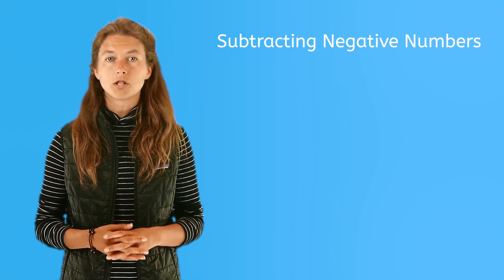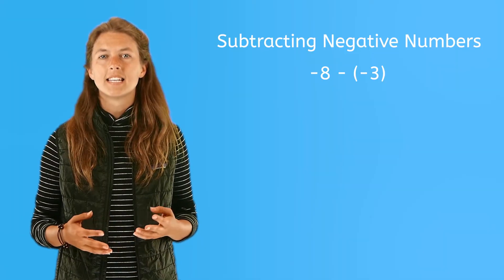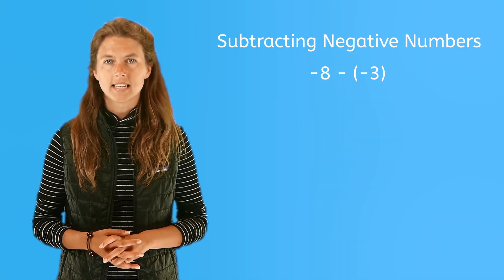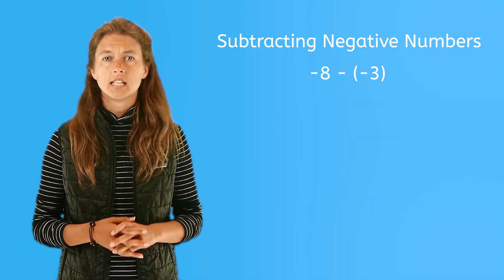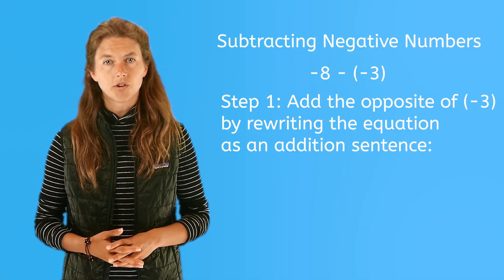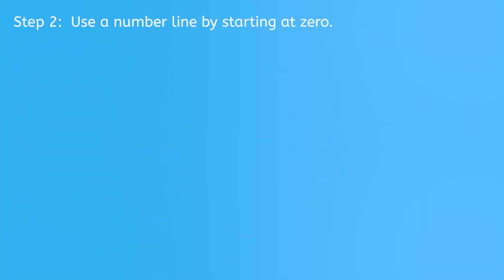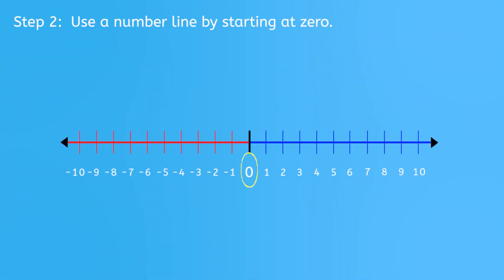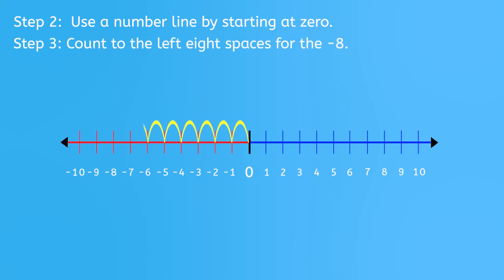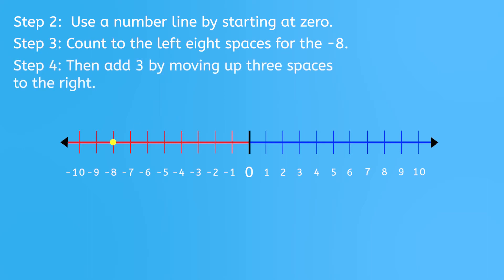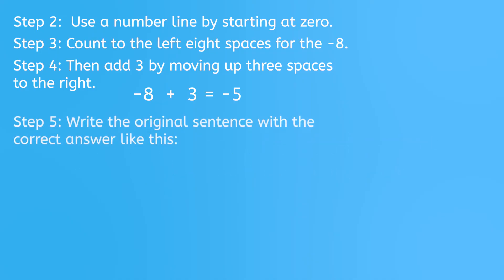Here is a subtraction problem with two negative integers: negative eight minus negative three. Step one: add the opposite of negative three by rewriting the equation as an addition sentence — negative eight plus three. Step two: use the number line by starting at zero. Step three: count to the left eight spaces for the negative eight. Step four: then add three by moving up three spaces to the right — you land on negative five. Negative eight plus three equals negative five. Step five: write the original sentence with the correct answer — negative eight minus negative three equals negative five.